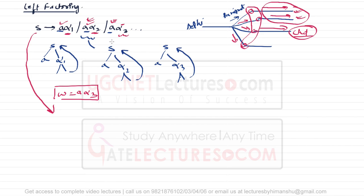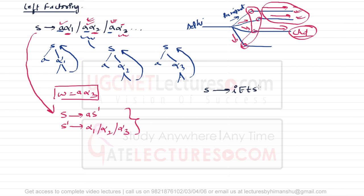How to eliminate left factoring? If we have a grammar like S can derive a alpha1 slash a alpha2 slash a alpha3, to eliminate left factoring we can write S derives a S', and this S' can derive alpha1 slash alpha2 slash alpha3. You can use this as a formula to eliminate left factoring. For example, consider the grammar: S can derive i e t S slash i e t S e S slash a, and E can derive b.